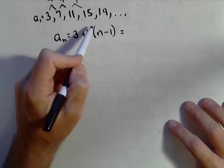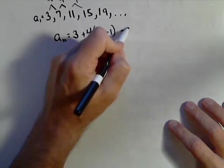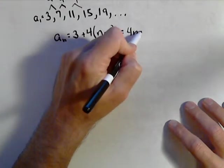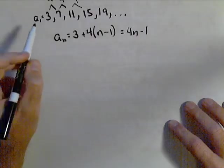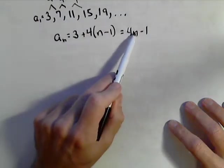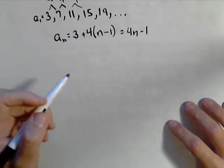We can multiply this out and distribute if we want, and we'd have four n minus one. And we can see the third term is 11. Well, if we plug three in, we get 12 minus one, which is 11.